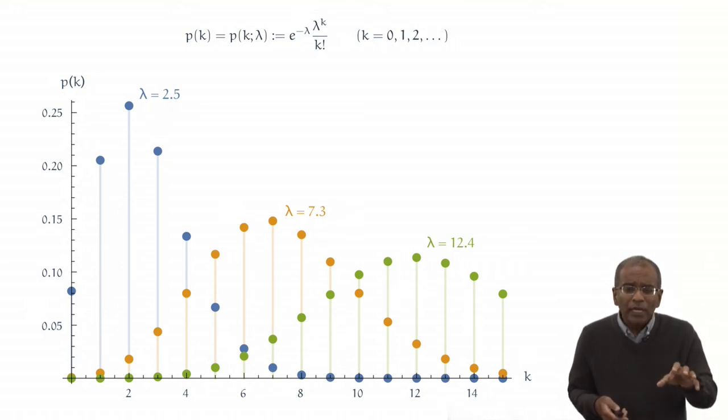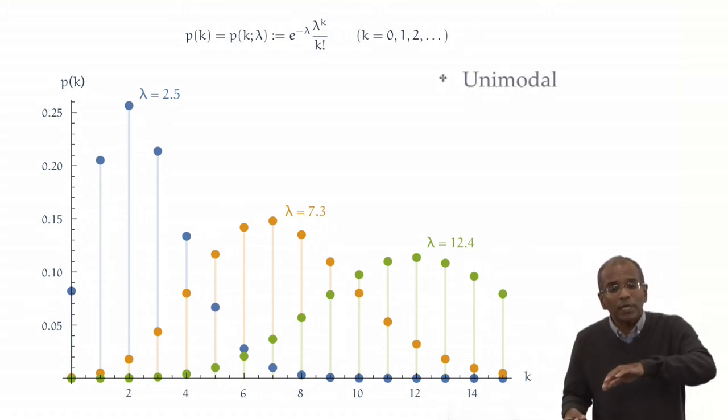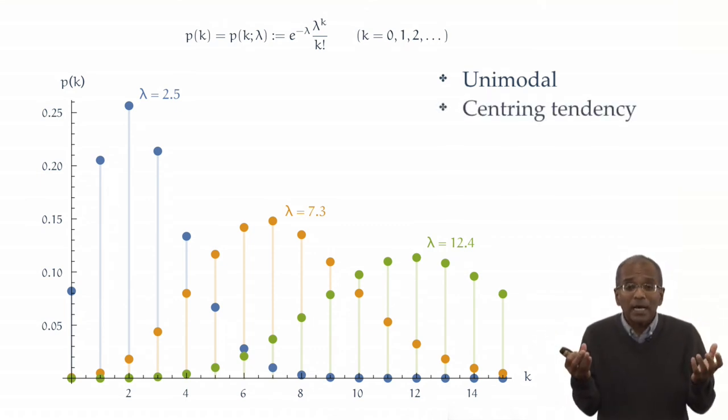Certain features are broadly, immediately visible. And superficially, they are similar to the kind of features we have seen for the binomial distribution. For one, for any choice of lambda, the distribution appears to be unimodal—it increases and then decreases. The distribution appears to have a center, an expectation, a probabilistic center of mass, centered at or very close to the value of lambda.